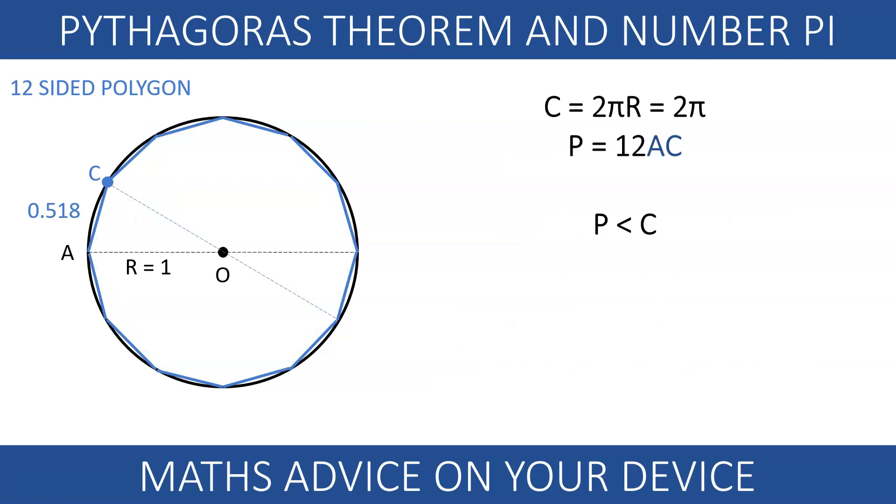Since the 12-sided polygon is inscribed inside the circle, 2π must be bigger than 12 AC, so π must be bigger than 6 AC. Replacing AC with 0.518, π must be bigger than 3.108.